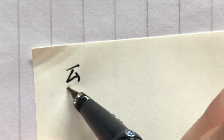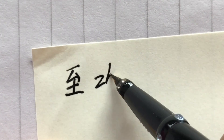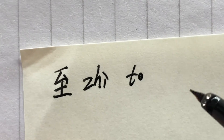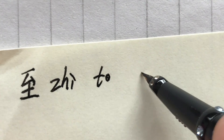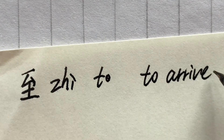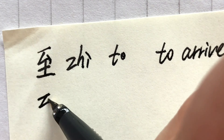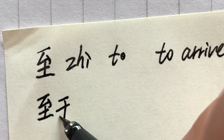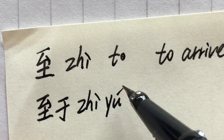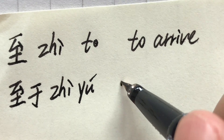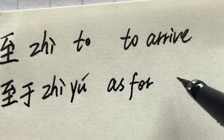I will first write it in regular script, then following one word and one sentence. Zhi — to, to arrive. For example, zhi yu. Zhi yu means 'as for' or 'as to'.